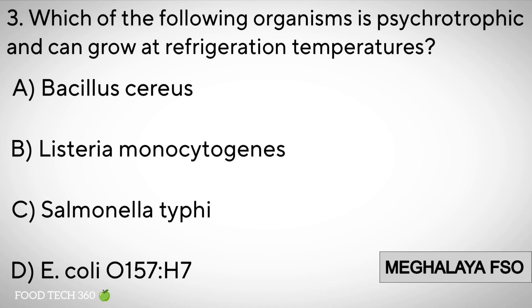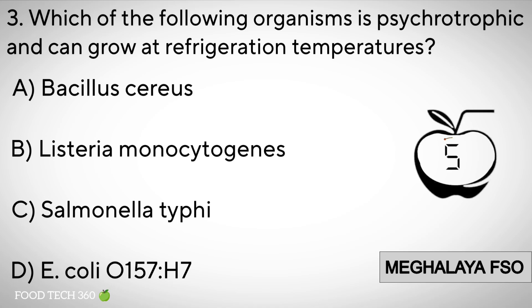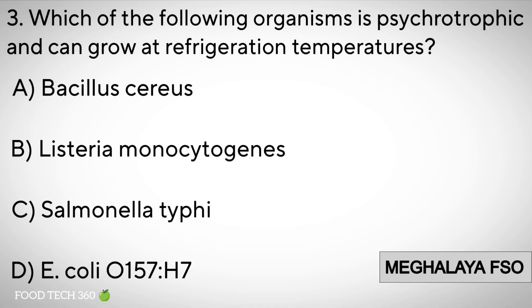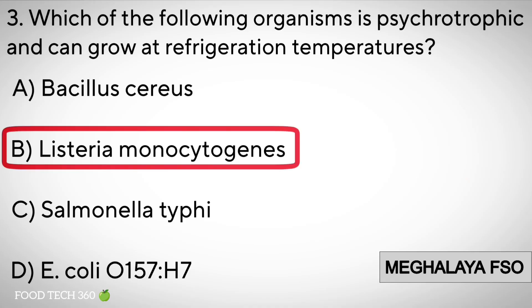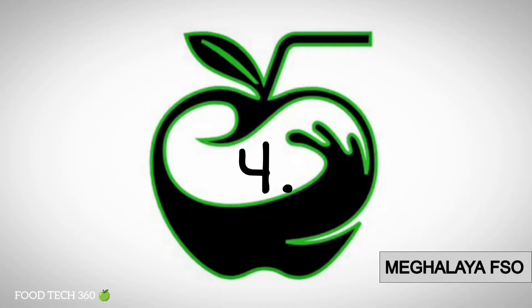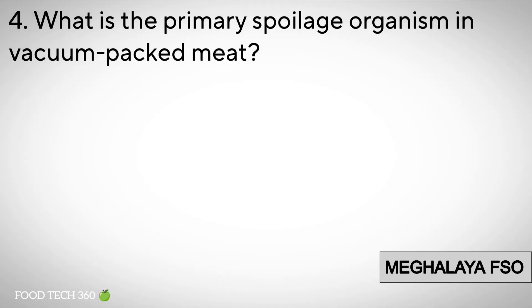C. Salmonella typhi. D. E. coli. Correct answer: B. Listeria monocytogenes. Question number 4: What is the primary spoilage microorganism in vacuum-packed meat?